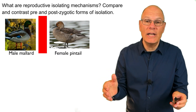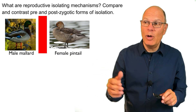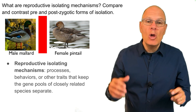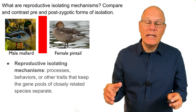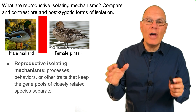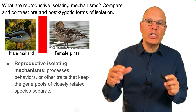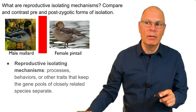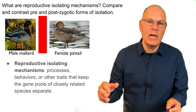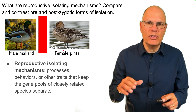What are reproductive isolating mechanisms? Compare and contrast pre- and post-zygotic forms of isolation. Reproductive isolating mechanisms are processes, behaviors, or other traits that keep the gene pools of closely related species separate. Mallards, pintails — they're both ducks. How do they maintain separate gene pools?